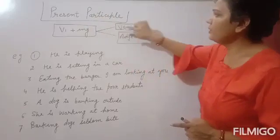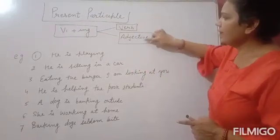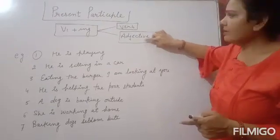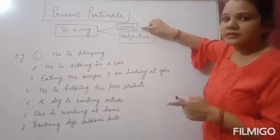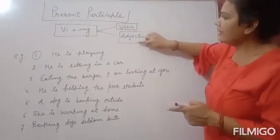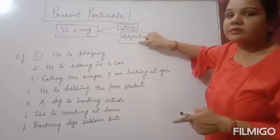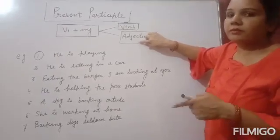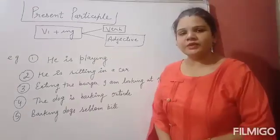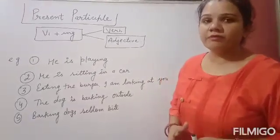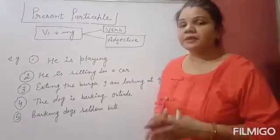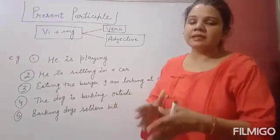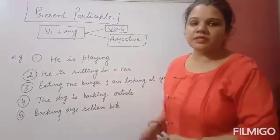Present participle can be used as a verb and as an adjective in a sentence. A verb always shows action in the sentence, and an adjective always qualifies or modifies someone or something and gives extra information about it. Let's understand how we can identify a present participle in a sentence — whether it is used as a verb or as an adjective — through examples.